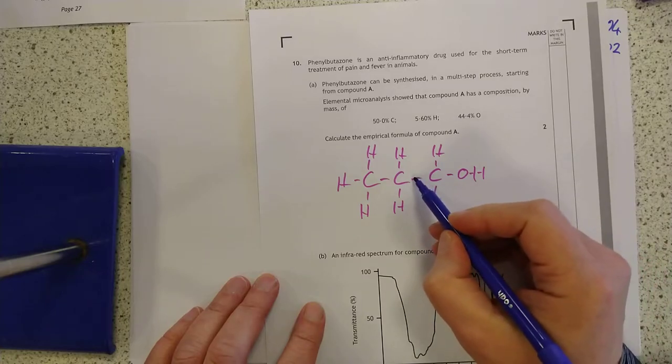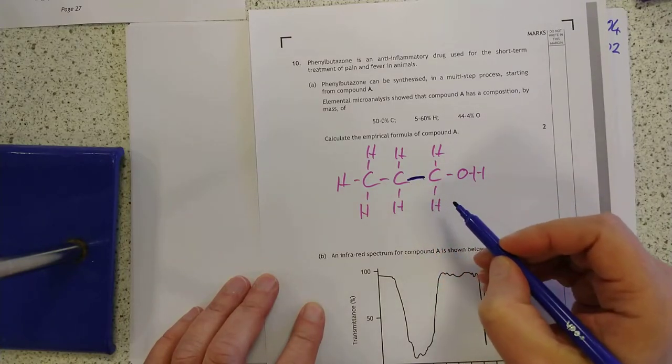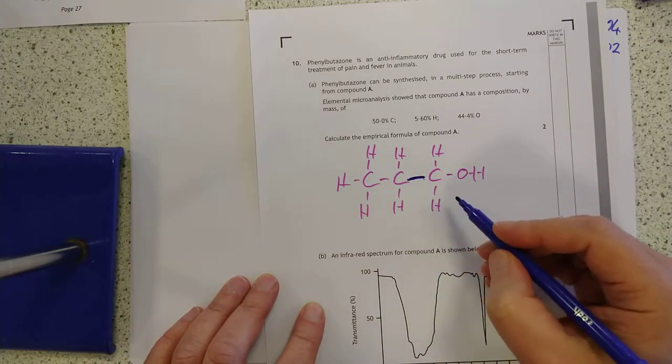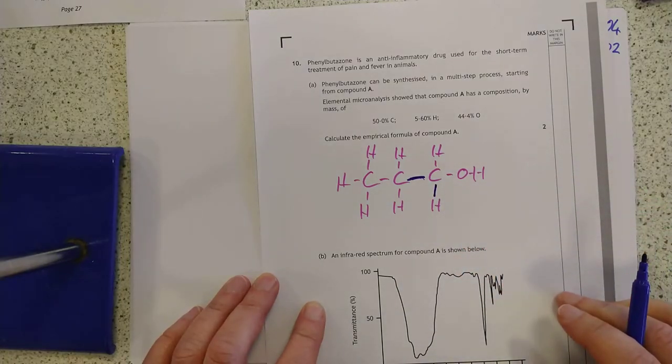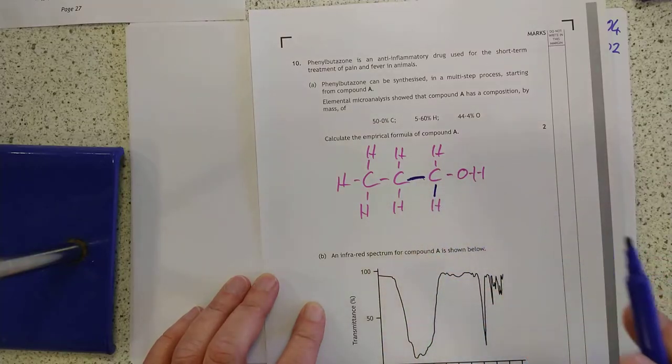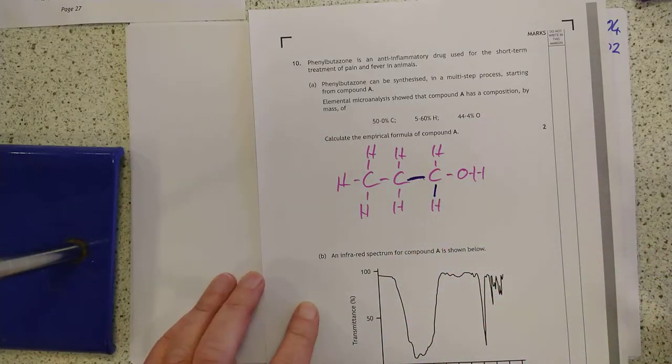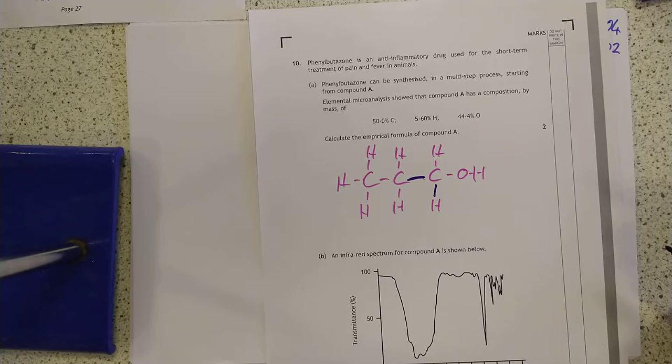But the key thing here is that a C-C bond does not vibrate or stretch or bend at the same wavelength as a C-H bond, which enables you to try and map different bonds to different wavelengths of infrared light that go missing. Because this is absorption spectroscopy, basically, folks.